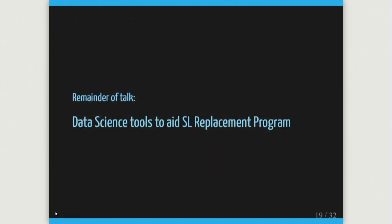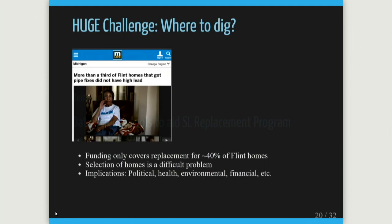For the remainder of the talk, let me describe our contributions to the service line replacement project and where this might go in the future. The big question is that we don't know where to dig. Not all of Flint has lead pipes — it may be 60 or 65%. Where do you put your resources? There are also questions like do you focus on unoccupied or occupied homes? Determining if a home is occupied is actually a real challenge in Flint.